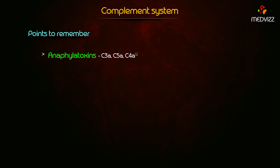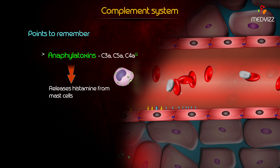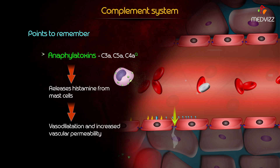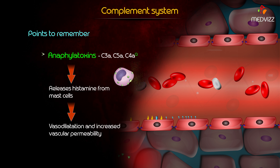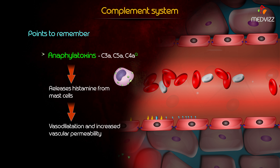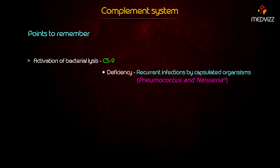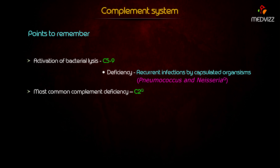Anaphylatoxins release histamine from mast cells, cause vasodilation, and increase vascular permeability. Activation of bacterial lysis is mainly done by the membrane attack complex (C5 to C9), which is why its deficiency leads to recurrent infections by encapsulated organisms such as Pneumococcus and Neisseria.